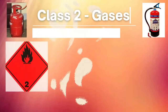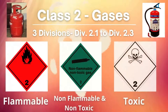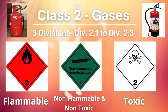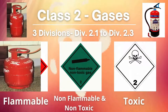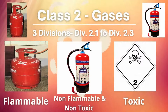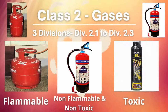Next is Class 2: Gases. It has three divisions — flammable gases, non-flammable and non-toxic gases, and toxic gases. Examples include LPG gas, fire extinguishers, and toxic aerosols such as bug spray.